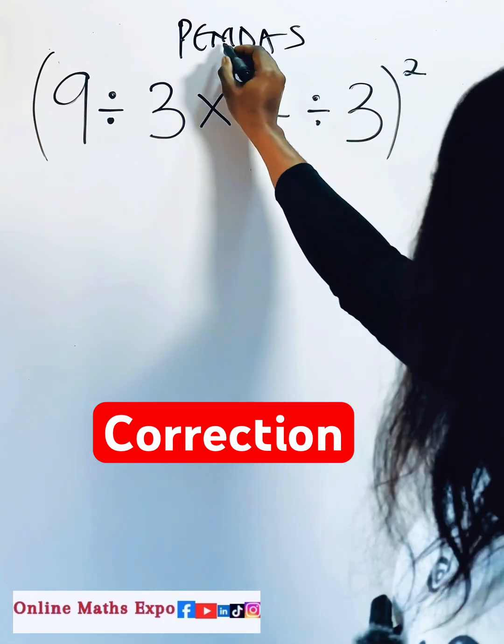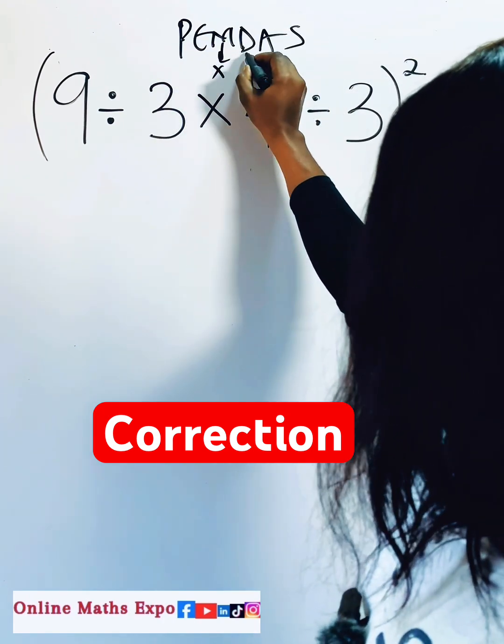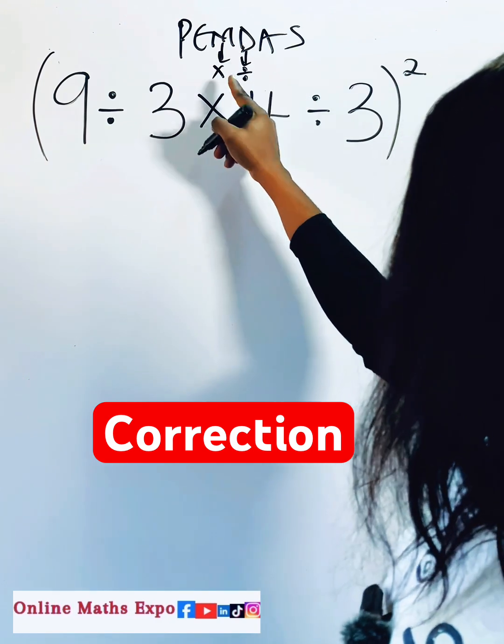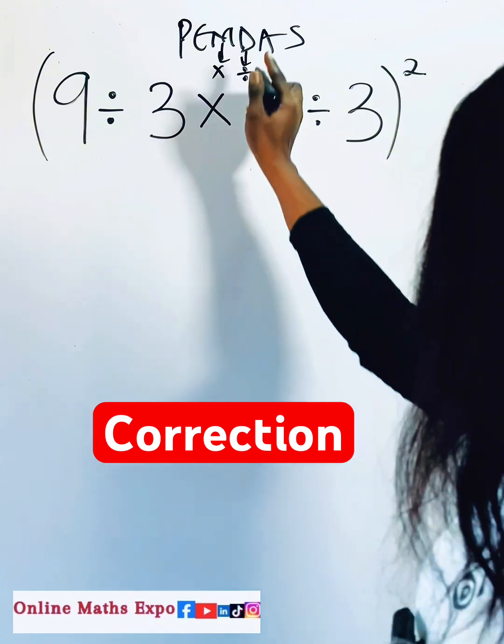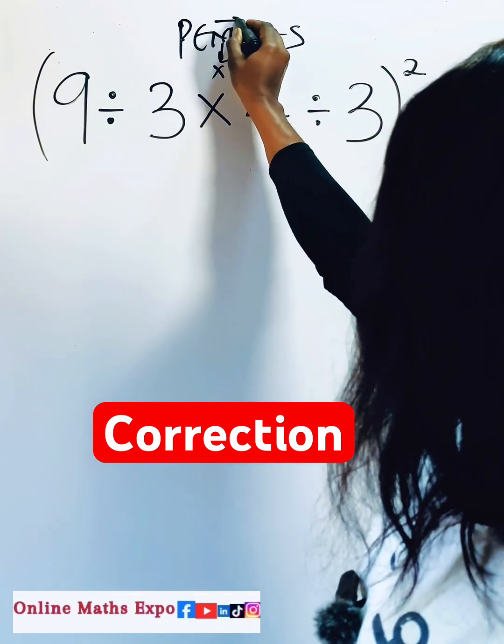Now you see that this M is multiplication, this D is division. But remember, multiplication and division are of the same strength. So deal with the two at the same time from left to right.